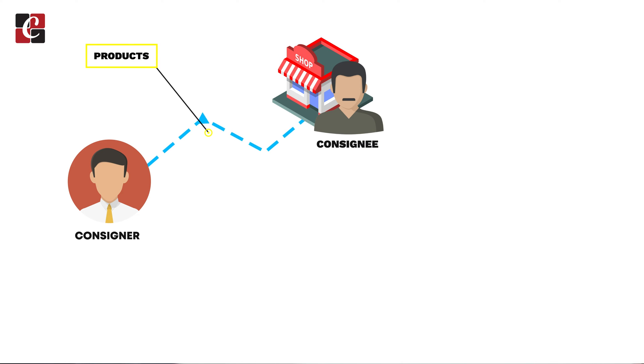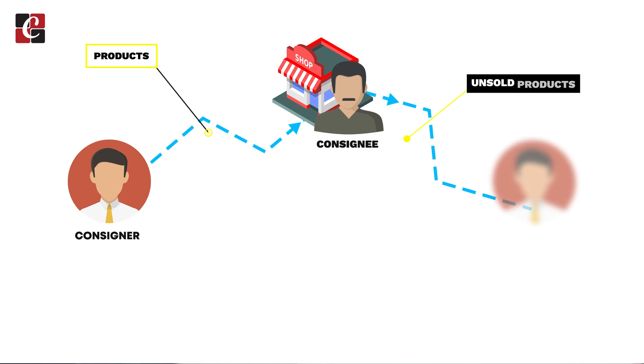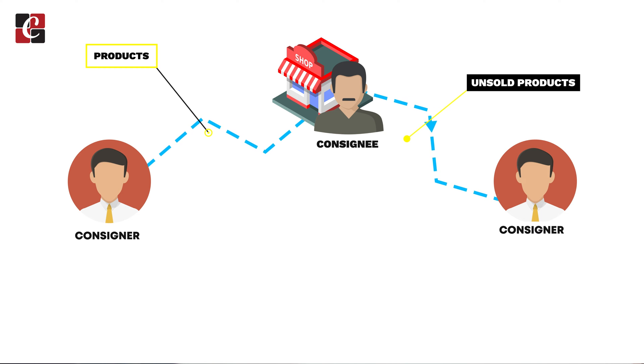Consignment is an arrangement where the consigner gives the product to the consignee to sell. The unsold product can be sent back to the consigner by the consignee. If the consignee sells the product, they will get a percentage of profit from it, and the consignee has to give a share of the profit they made back to the consigner.